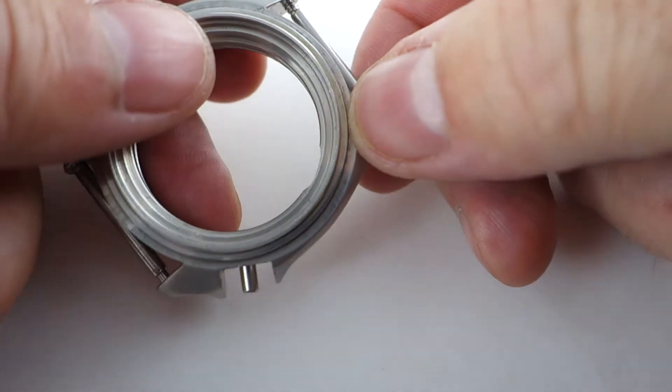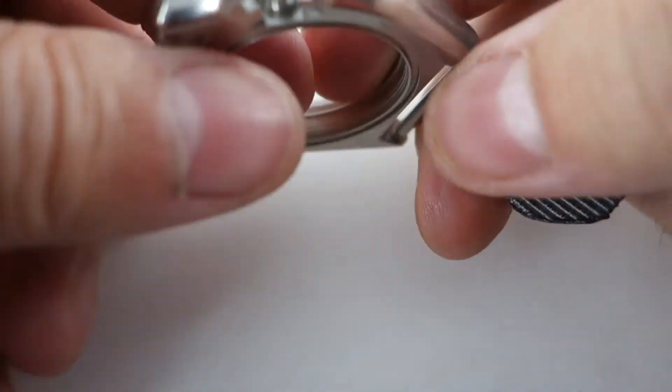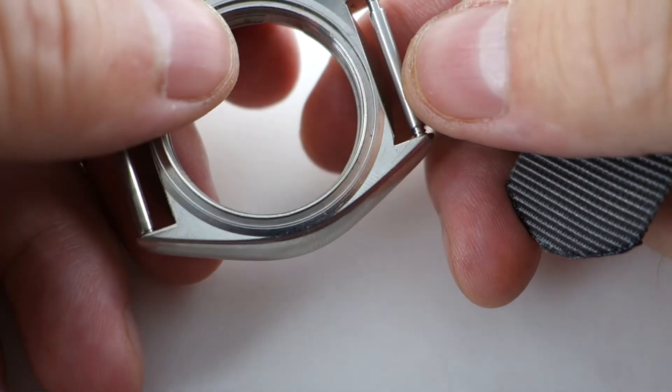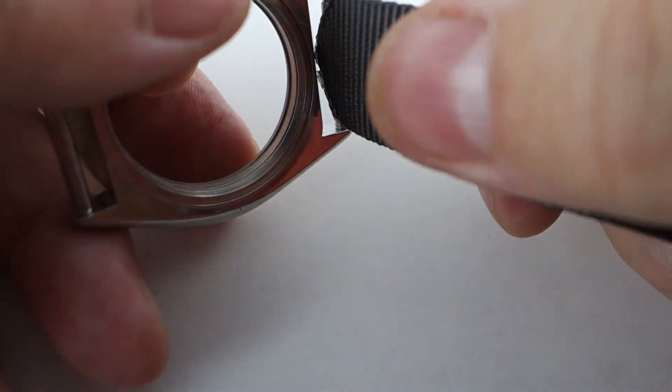So here I have a Seiko case. It's an older one, off a 7548. And the reason why it's not being used is because on one hand the lug holes are worn out. So let's see how it works.